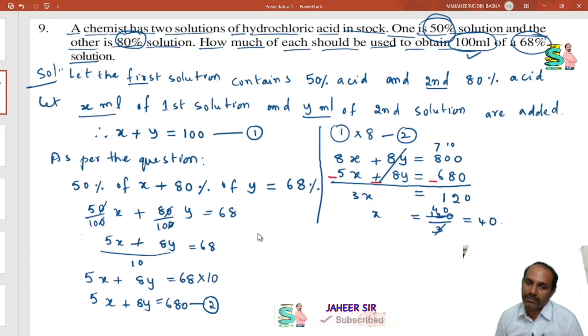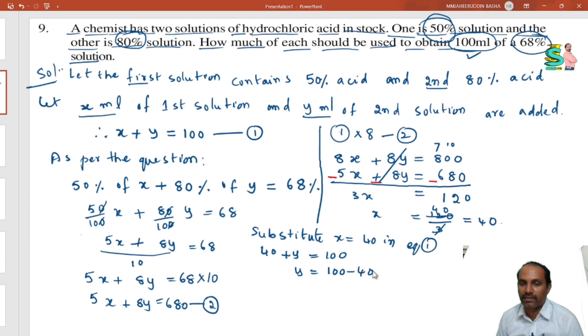Now, from equation 1, substitute x equal to 40. Then x plus y equal to 100 means 40 plus y is equal to 100. y is equal to 100 minus 40 is equal to 60.